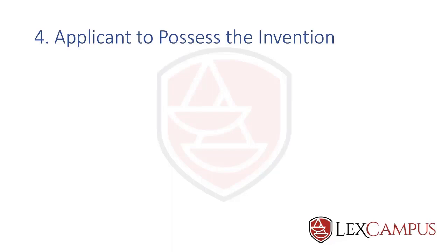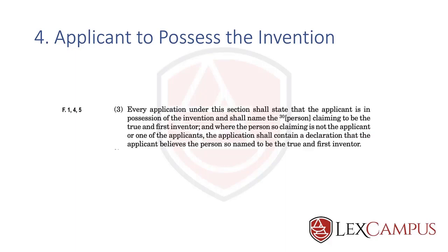The fourth thing you need to remember in section 7 is that the applicant has to possess the invention. Section 7.3 states that every application under this section shall state that the applicant is in possession of the invention. You also need to name the person claiming to be the true and first inventor, and where that person is not the applicant — because it has been assigned — the application shall contain a declaration of who the applicant believes to be the true and first inventor.